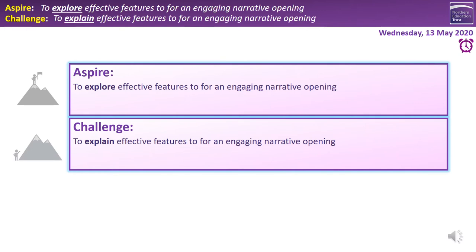We're moving on now — the last two weeks we focused on descriptive writing, and the next two weeks we're going to focus on narrative writing, that's story writing. There's very little difference actually between descriptive and narrative writing. The only main difference is that in a narrative there's more of a story line, but you're going to be using those same skills. What we're learning to do today is to explain effective features of an engaging narrative opening — what is effective and hooking for us as a reader that makes us want to continue reading that story. Then, to aspire, we're going to explore those effective features, thinking of more than one or two reasons across a whole range of ideas.